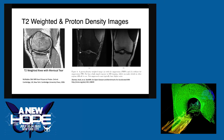On the left is a fat-suppressed image, and on the right is a regular image. You can see the subdermal fat, but also the bone marrow gets darker when you turn on fat suppression.